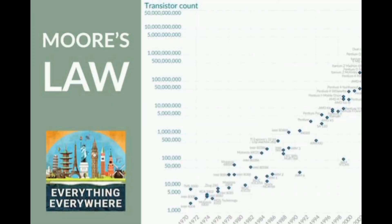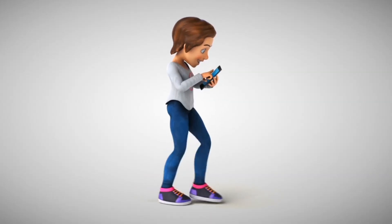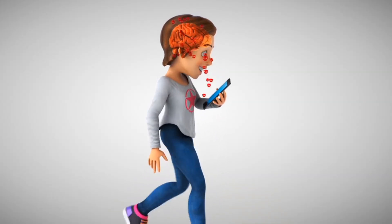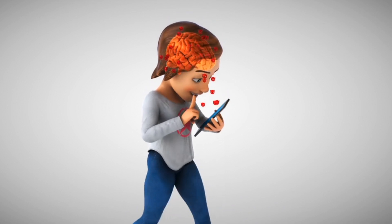Moore's Law, formulated by Intel co-founder Gordon Moore in 1965, observed that the number of transistors on a microchip doubles approximately every two years. This exponential growth in transistor density has driven the continuous miniaturization of electronic devices and proliferation of computing power.